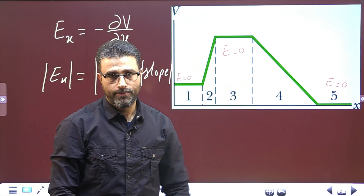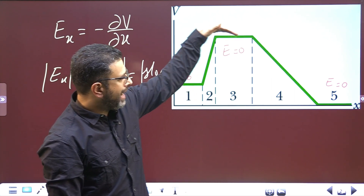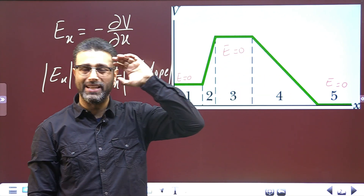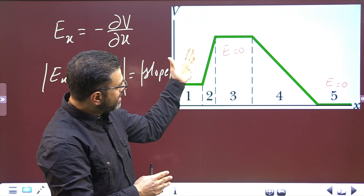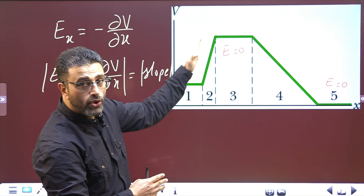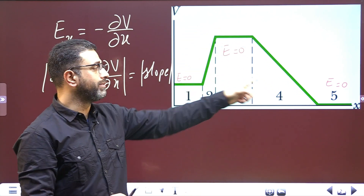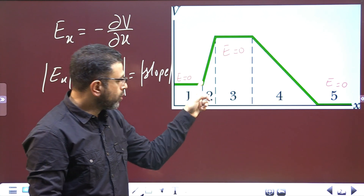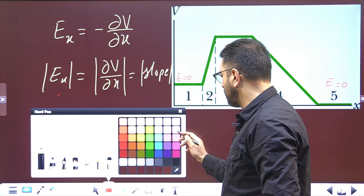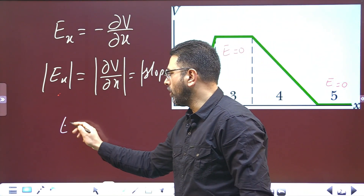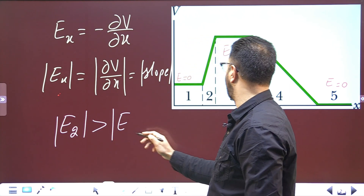We are left with regions 2 and 4. In case of region 2, we have a positive slope, and in case of region 4, we have a negative slope — but that has to do with the direction of the field, so let's only consider the magnitude. Clearly, region 2 is more inclined than region 4, meaning region 2 has a greater slope, so the magnitude of the field in region 2 is greater than the magnitude of the field in region 4.